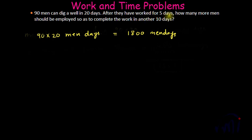And the next part of the problem is: after they work for 5 days how many more men should be employed so as to complete the work in another 10 days. So for that we have to know the amount of work left after these people have worked for 5 days. If 90 people have worked for 5 days they have actually completed the work equivalent to 450 which is 90 multiplied by 5 men days. So what is the amount of work left? Amount of work left will be found by subtracting 0 minus 0, 0, 10 minus 5, 5, 7 minus 5, 3, and then we have 1.